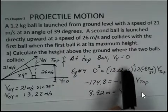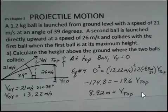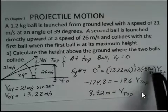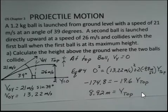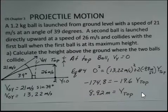So square this number, subtract that from both sides. Two times minus 9.8 is minus 19.6. Divide both sides by minus 19.6, and we find that it's 8.92 meters above the ground. And that's the y position when we're at the top of the motion.